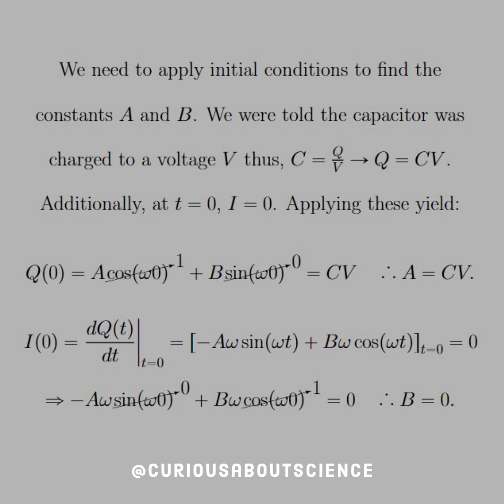So Q at zero, if we plug this in, we see that cosine of zero goes to one, we like that. Sine of zero goes to zero, we like that. But we also know that from the initial condition, Q is equal to CV. So we just plug in CV on the right hand side. And thus we see that A is actually equal to CV. That one was easy.